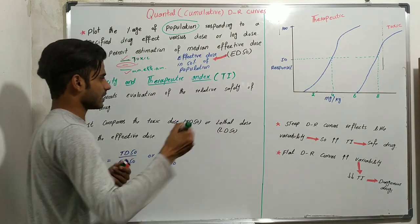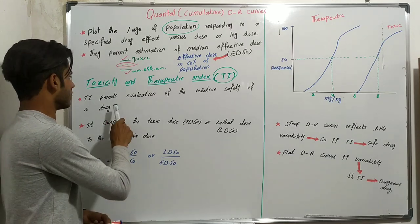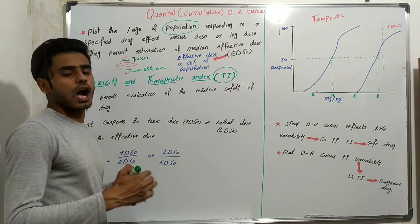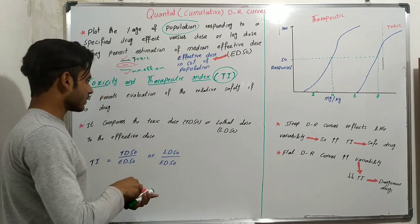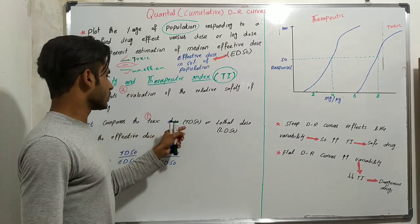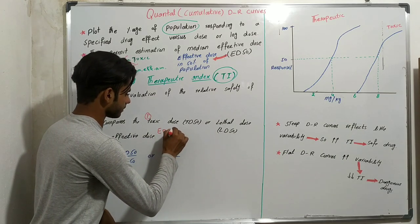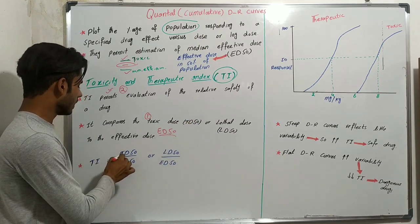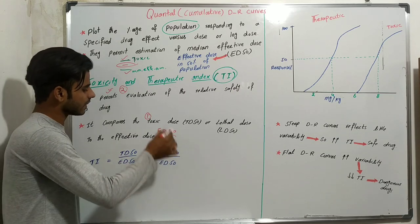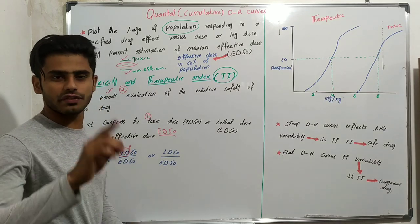Next is toxicity and the therapeutic index. The therapeutic index compares the toxic dose TD50, or lethal dose LD50, to the effective dose ED50. The formula is: therapeutic index equals TD50 divided by ED50, or LD50 divided by ED50. TD50 is the dose of a drug that is toxic in 50 percent of the population.